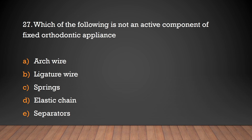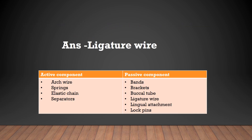Which of the following is not an active component of a fixed orthodontic appliance? Arch wire, ligature wire, springs, elastic chain, or separators? The answer is ligature wire. In fixed orthodontic appliances, the active components are arch wire, springs, elastic chains, and separators. The passive components are bands, brackets, buccal tube, ligature wire, lingual attachment, and lock pins.